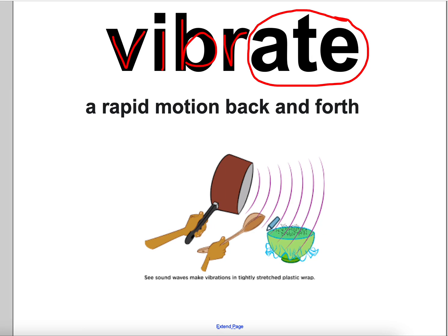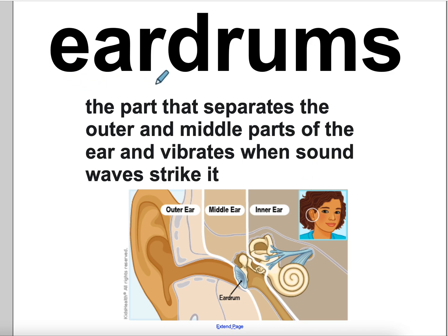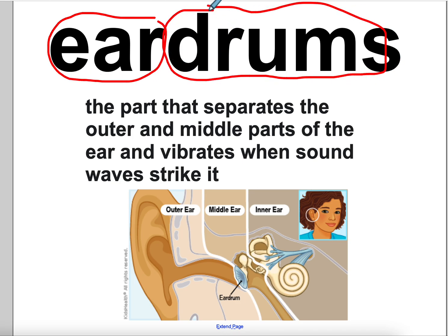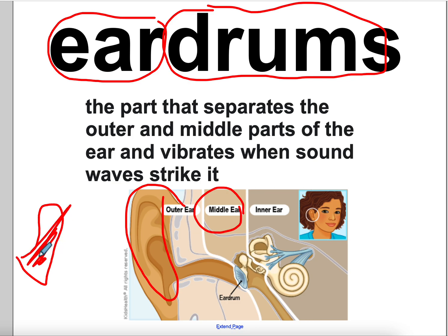You can't see vibration, but you can tell when an object is vibrating because it starts to move. The next word is eardrums. D-R-U-M-S. Ear. Eardrums. The eardrum is the part that separates the outer ear and the middle ear. It vibrates when sound waves strike. When we play the guitar, the sound waves go and they strike the eardrum. If something is too loud, it's going to hurt our eardrums, so don't listen to music too loud.